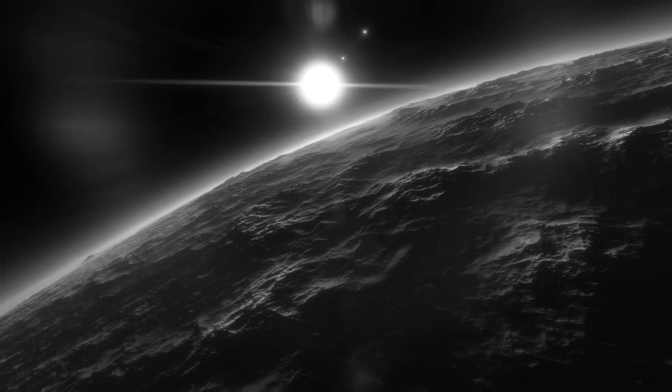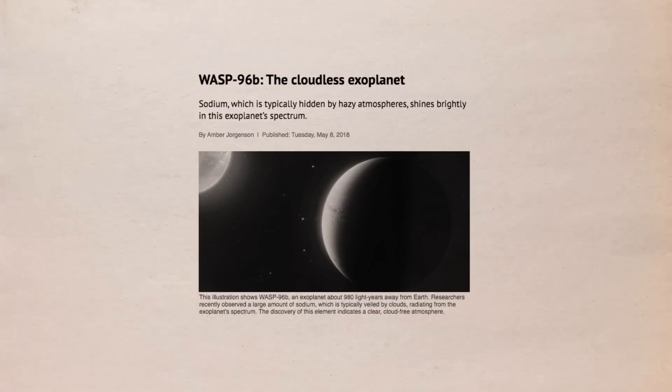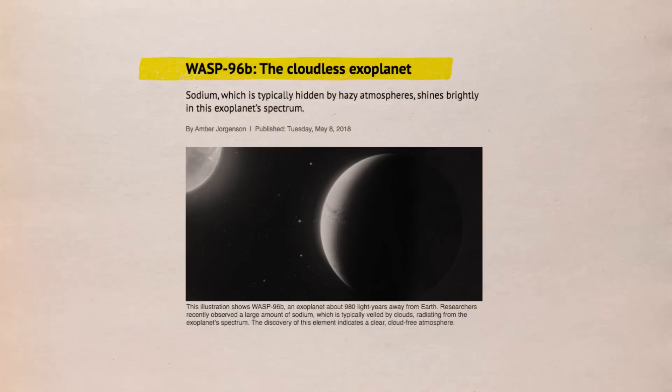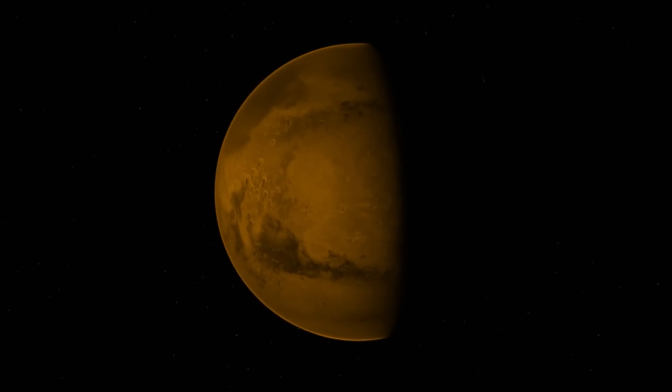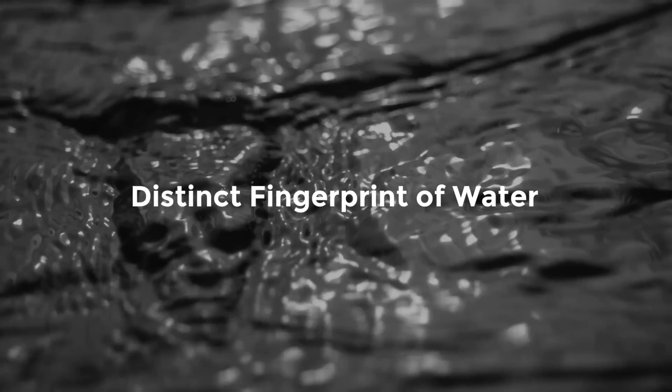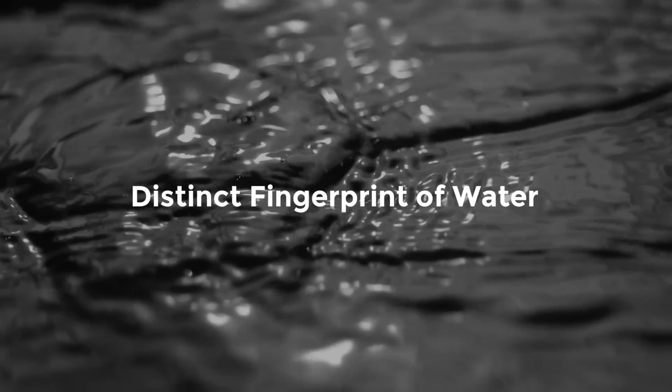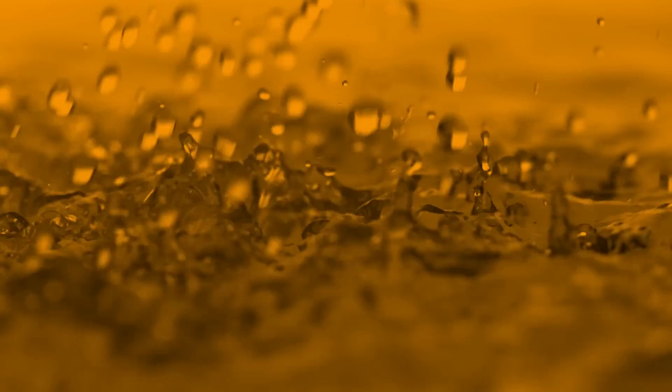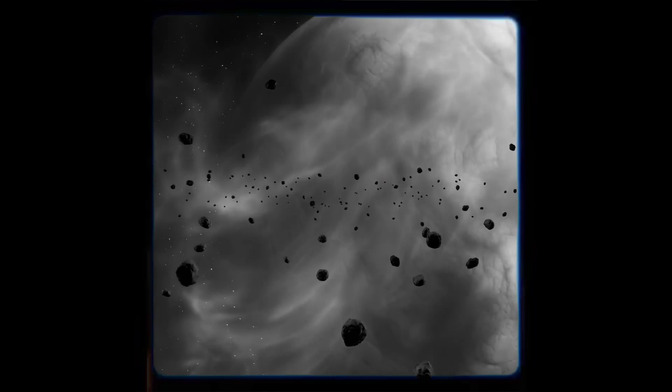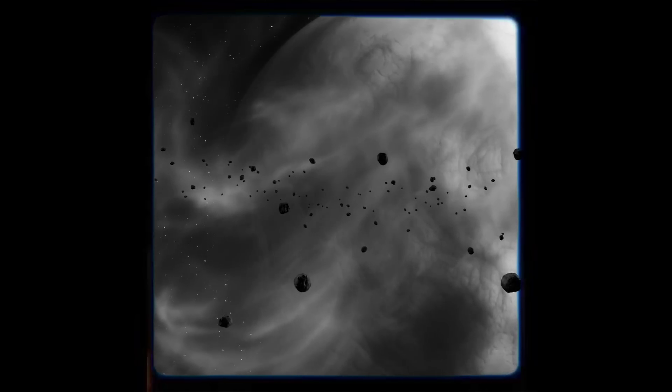Previous investigations of this planet could not identify any haze or clouds, but a comprehensive study conducted by Webb of the hot, puffy planet outside of our solar system has shown evidence of both haze and clouds, as well as the distinct fingerprint of water. According to NASA, the distinct signature of water, along with evidence for clouds and haze in the atmosphere surrounding a hot, puffy, gas-giant planet orbiting a distant sun-like star.